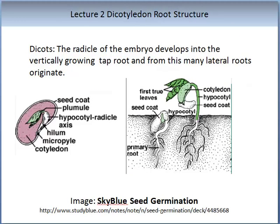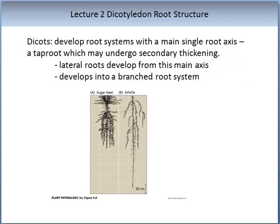Now let us examine a dicotyledon root structure, again starting with germination. The radicle of the embryo develops into a vertically growing tap root, and from this, many lateral roots can originate. After germination of the dicot seed, the root system develops into a main single root axis called a tap root, which will eventually undergo secondary thickening. Lateral roots will develop from this main axis, forming a branched root system. The image on the slide shows two dicotyledon root structures: that of sugar beet and alfalfa.